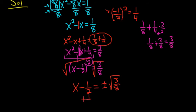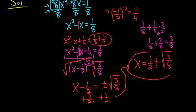Now we add 1/2 to both sides. We end up with x = 1/2 ± √(3/8). So that should be the final answer.